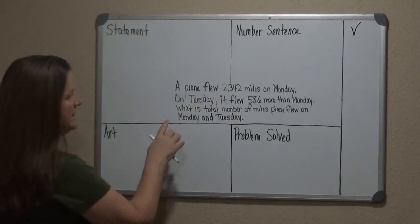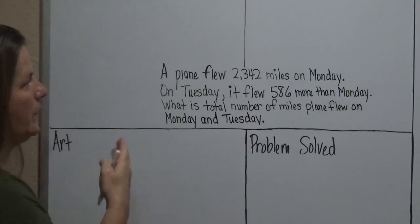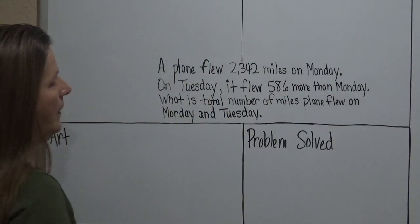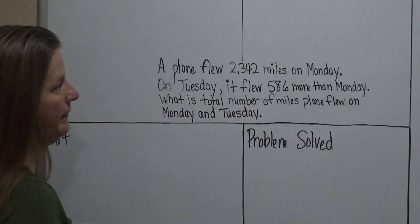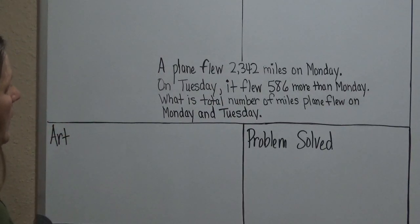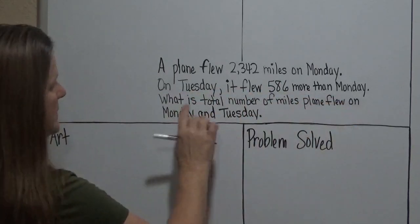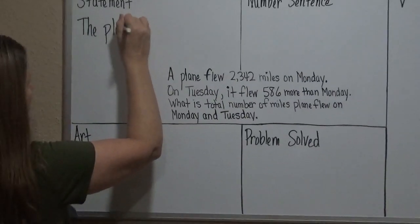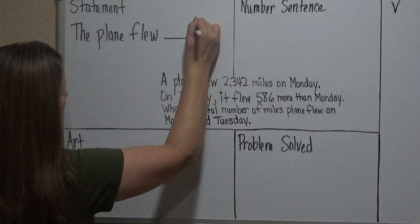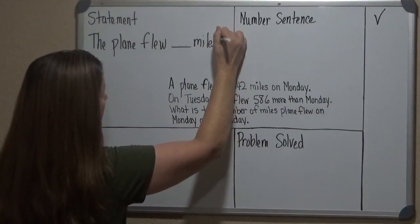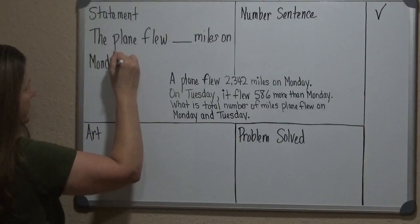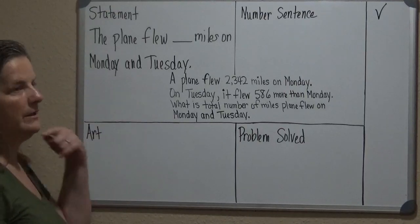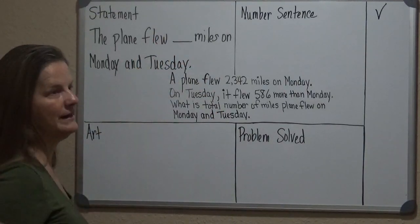So the Statement — always tell students that you need to go to the very last sentence. The problem reads: a plane flew 2,342 miles on Monday. On Tuesday it flew 586 more than Monday. What is the total number of miles the plane flew on Monday and Tuesday? We look at the last sentence and form the statement: 'The plane flew blank miles on Monday and Tuesday.' For the statement, you're answering the question posed.